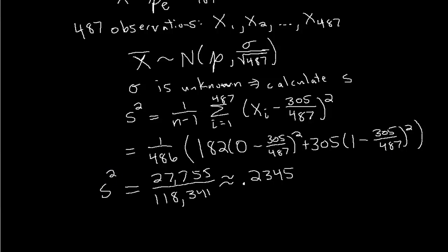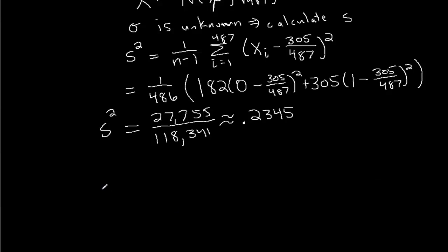That's my estimate for s squared, the variance. That's an unbiased estimate since we divided by n minus 1. So now I'm going to take the square root to get an estimate for the standard deviation. So s is equal to the square root of 27,755 over 118,341, which is approximately the square root of 0.2345, which is approximately 0.4843. That's our estimate for the standard deviation.